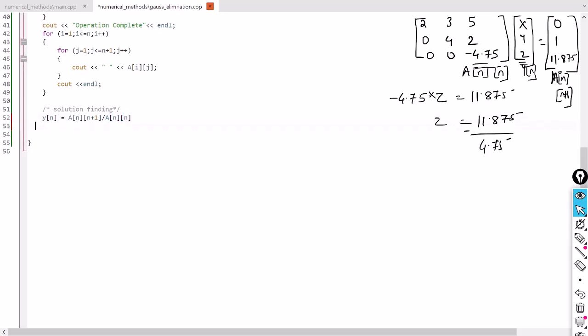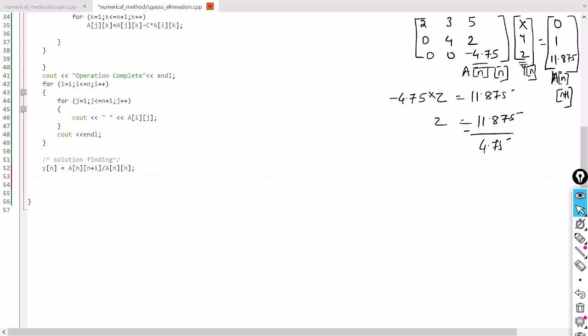Let me write this in the code. y_n is equal to a_n n+1 divided by a_n_n. This is straightforward. Now we'll move to the next thing, moving upward. The nth row is already covered. We will start from n-1 and go up to 1, so the index is i from n-1 to 1.